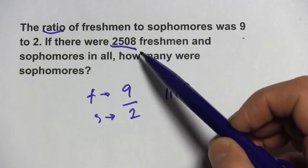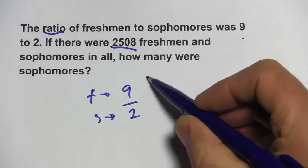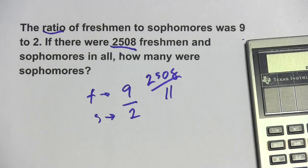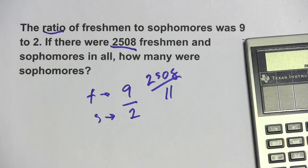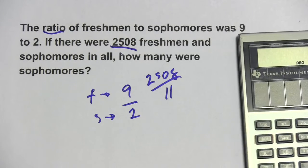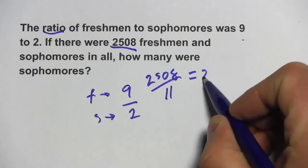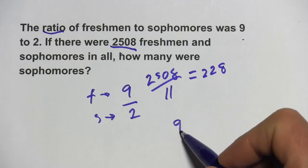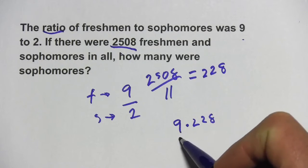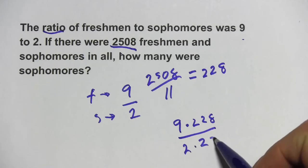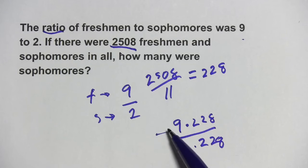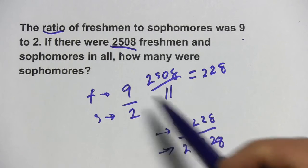So I'm going to take 2,508 and divide it by 11. I'm going to pull up my calculator for that. So that's 228. So this ratio I could rewrite as 9 times 228 over 2 times 228. And this should give me the real number of freshmen up here and the real number of sophomores down here.